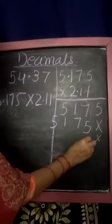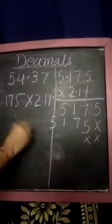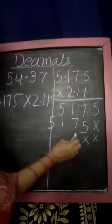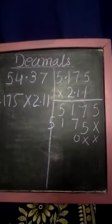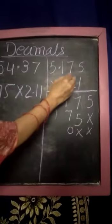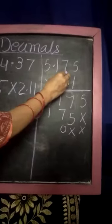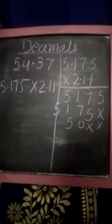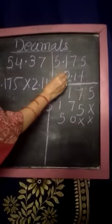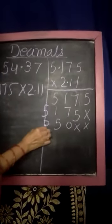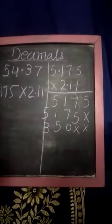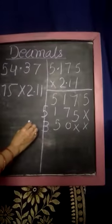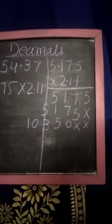Again, now there is 2. 2 times 5 is 10. 0 is there and 1 is on carry. 2 times 7 is 14, and carry 1 means 15. 5 is here and 1 again carry. 2 times 1 is 2, and 3. Now 2 times 5 is 10. We have to write 10 fully here.